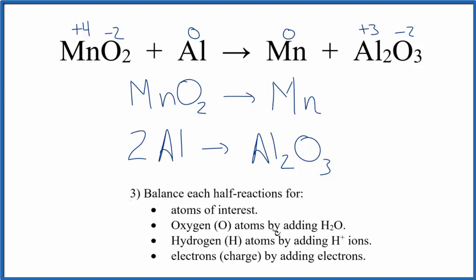Now we'll add oxygen atoms to each side by adding water to balance the oxygens. We have two oxygens, so let's add two water molecules. Two times one, that gives us two water molecules. Over here, we'll add three water molecules. So now we have three oxygens, three oxygens.